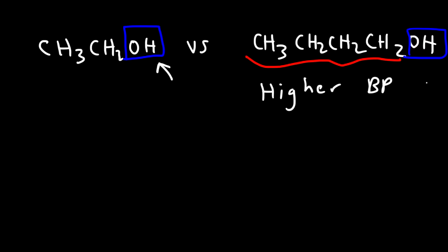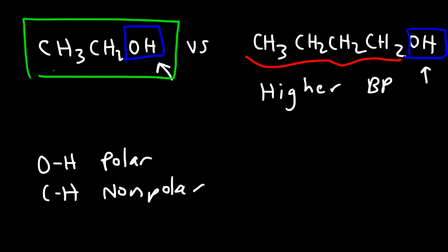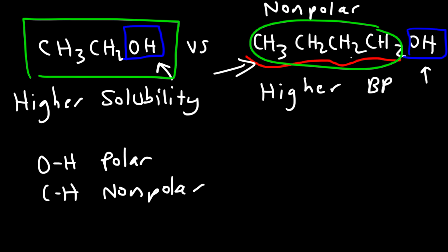They both have the same OH functional group. For water solubility, the OH bond is polar but the CH bond is nonpolar, and water is a polar molecule — like dissolves like. So molecules with the OH group will be highly soluble in water, whereas those with a CH group will not. Ethanol is soluble in water, and 1-butanol is still soluble in water, however because of its longer nonpolar chain, the solubility will be less than that of ethanol. The solubility of butanol is small — you can dissolve some of it, but not much.